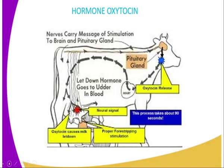Then we will go to hormone oxytocin. This is the second hormone which is very vital when it comes to the milk letdown system in the mammary gland. For the milk to flow up to the teats, the process begins from the brain at the part referred to as the pituitary gland. At the pituitary gland, it becomes stimulated, and the factors that normally stimulate the pituitary gland to secrete hormone oxytocin are the positive factors — the positive environment.